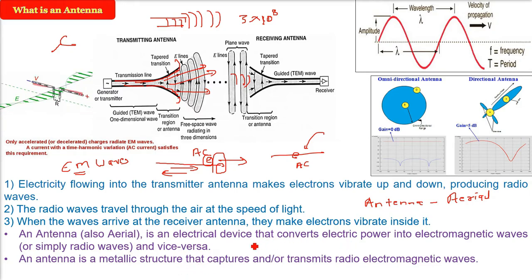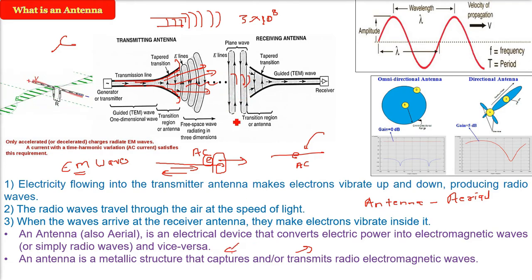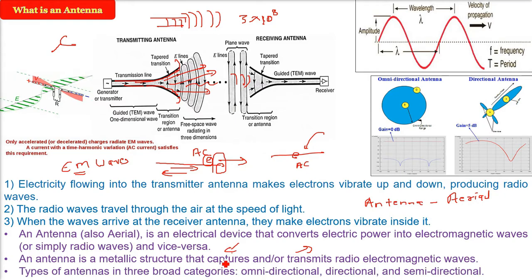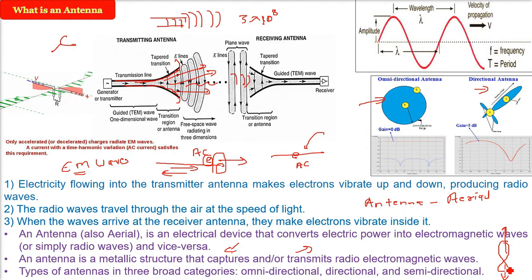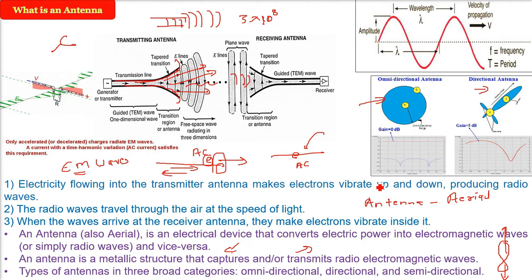The antenna is an electric device — a metallic structure that captures and transmits radio waves, converting electrical power into electromagnetic waves. There are different types of antennas in three broad categories. The omnidirectional antenna radiates in all directions. The directional antenna focuses in a single direction. And we have the semi-directional antenna, which directs in two or three sides.